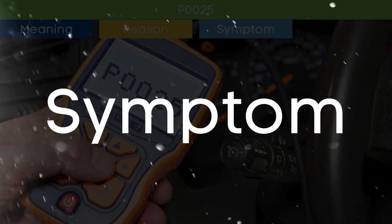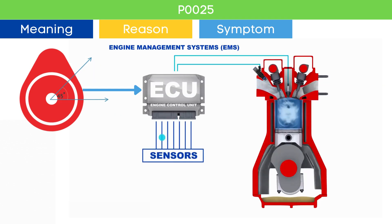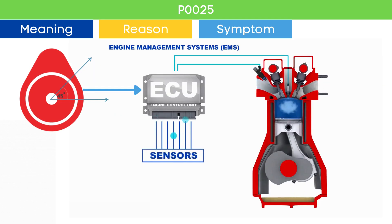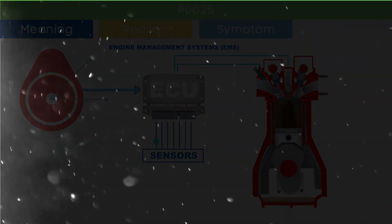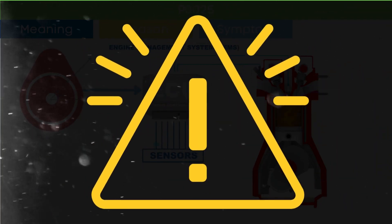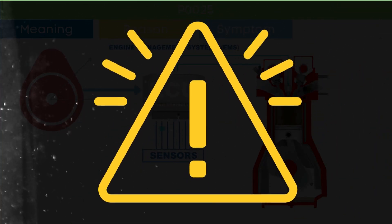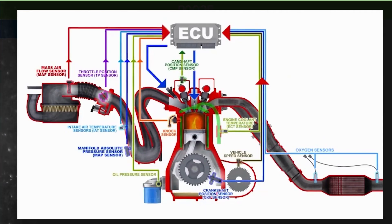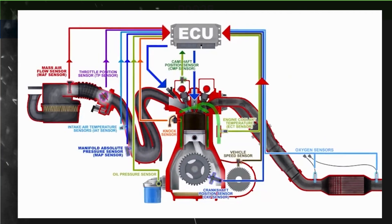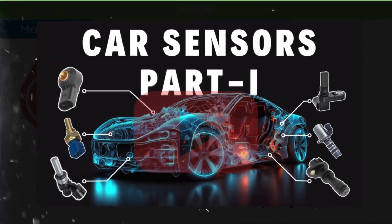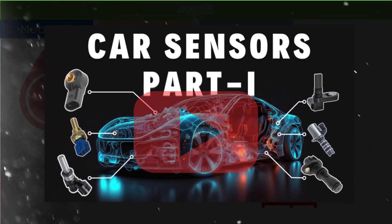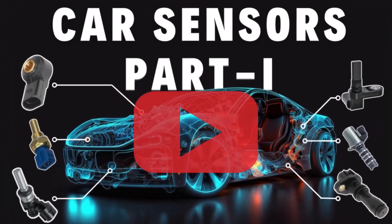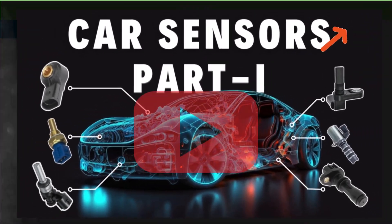Now that we know what the P0025 OBD2 code means, let's dive into the symptoms of P0025. Cam angle is a very crucial parameter in engine management systems to optimize the engine's performance. Due to the P0025 code, there may be an issue in engine performance. The ECU also relies on other EMS sensor inputs — you can check our detailed video on car EMS sensors via the link in the corner.